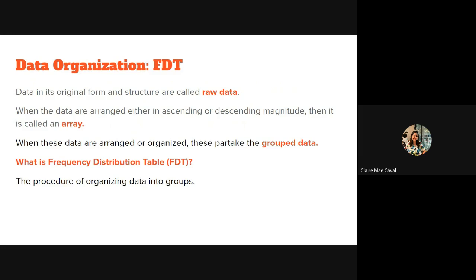A frequency distribution table is the procedure of organizing data into groups. Organization is part of the research steps — from collection, presentation, down to organization, analysis, and interpretation of data. So again, FDT is the procedure of organizing data into groups.